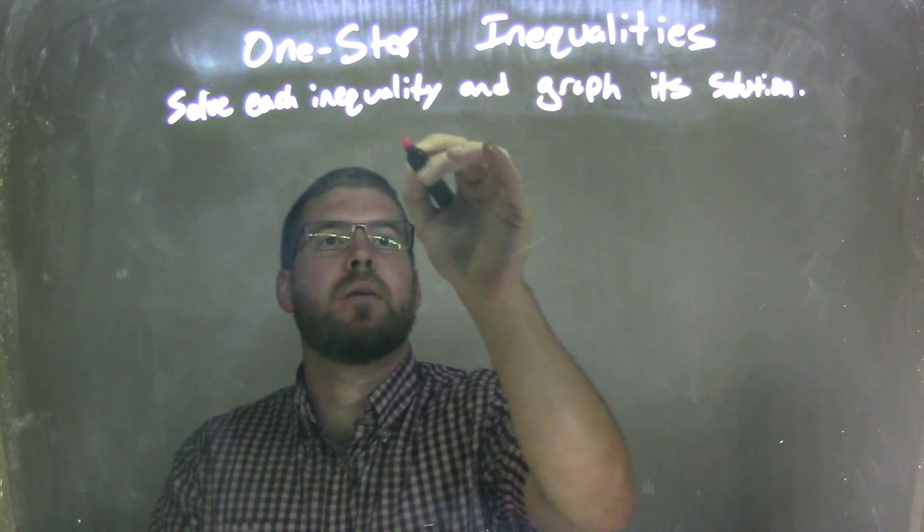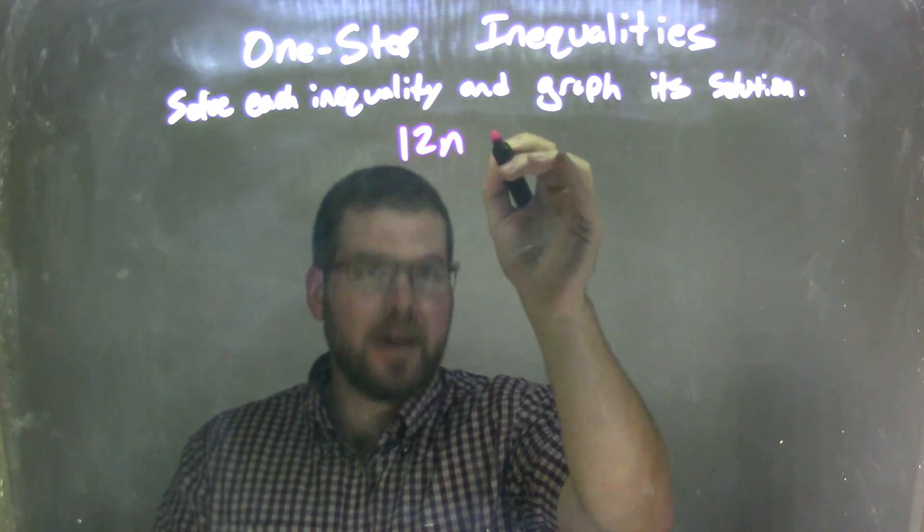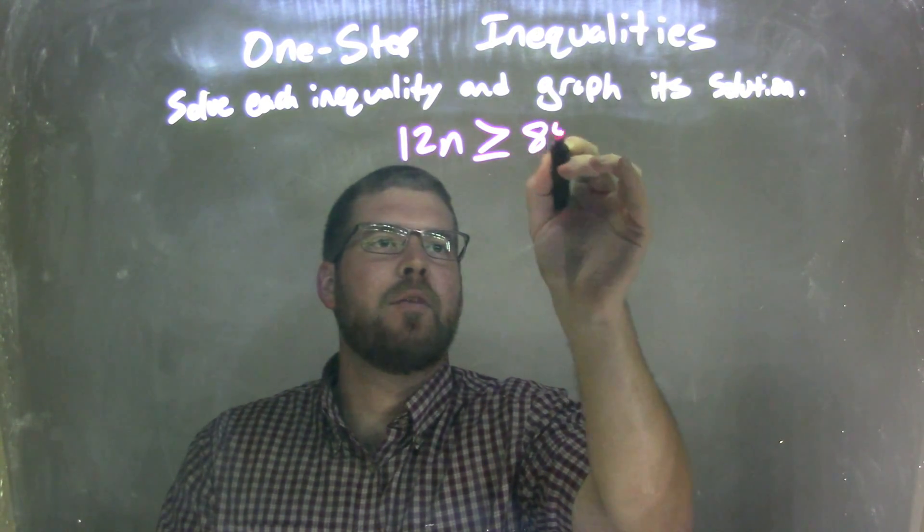So if I was given this inequality, 12n is greater than or equal to 84.